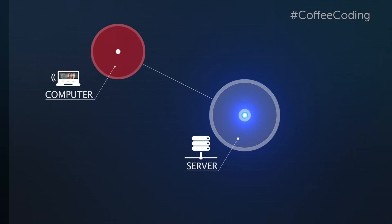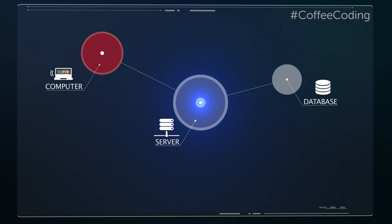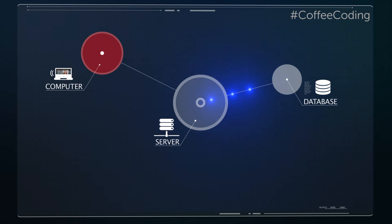What does it mean for a server to handle a request? Well, the server may need to communicate with the database. In this case it would either store information or retrieve information from that database. Once it gets that information back, it will send that information to the client, or the browser.